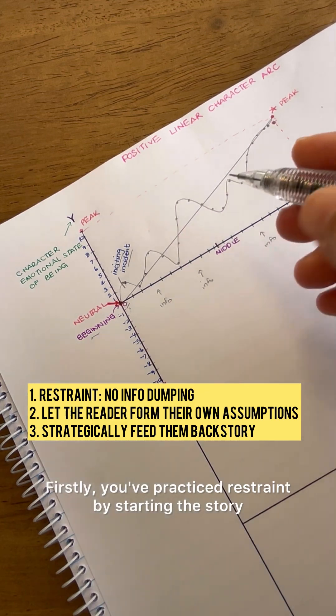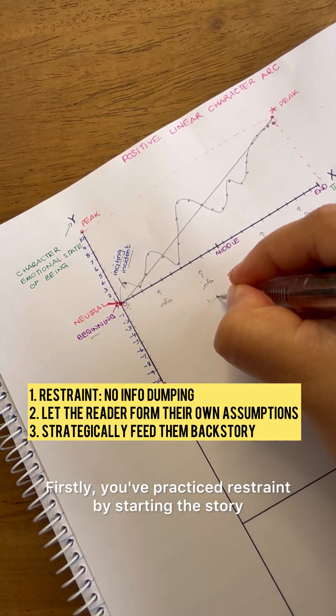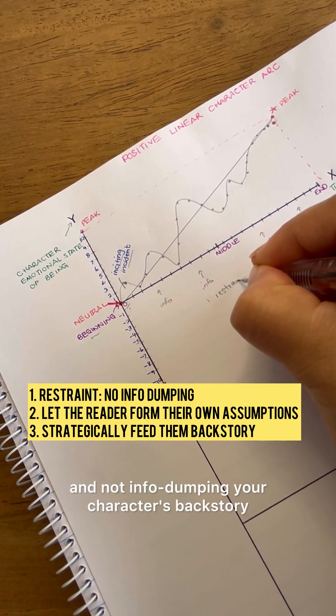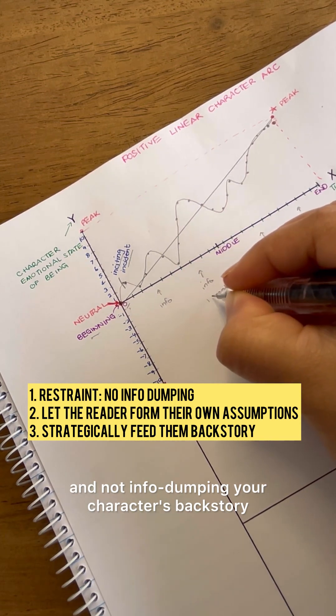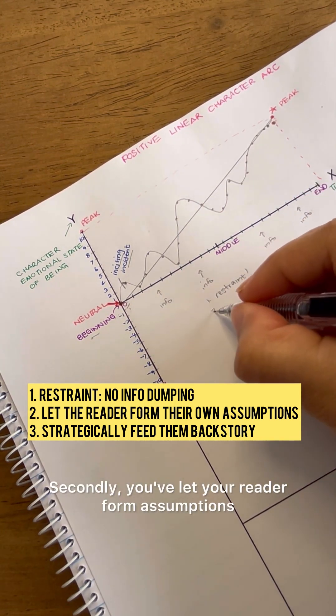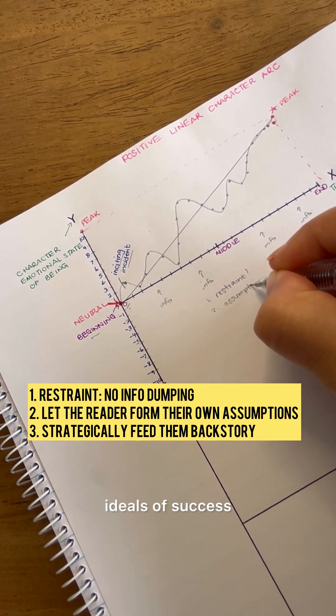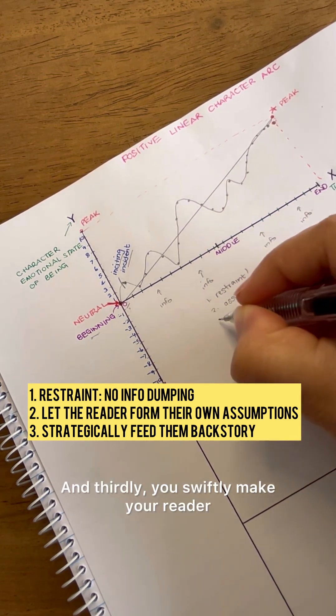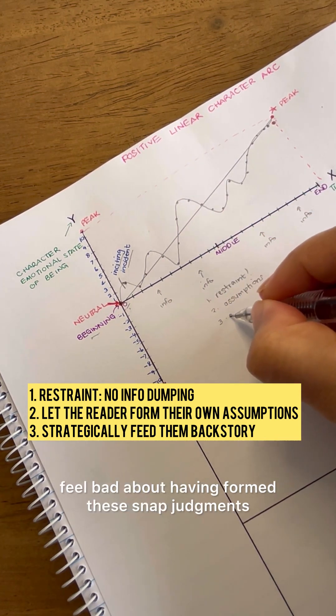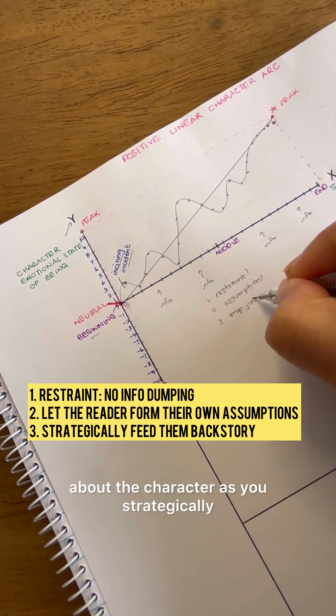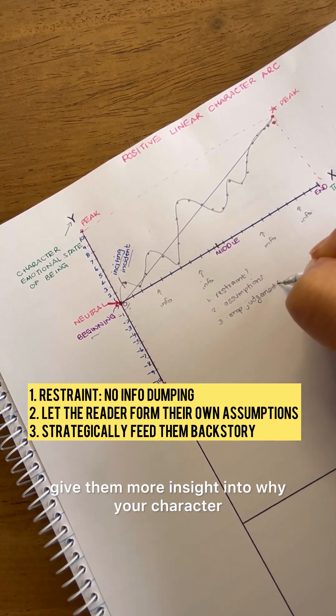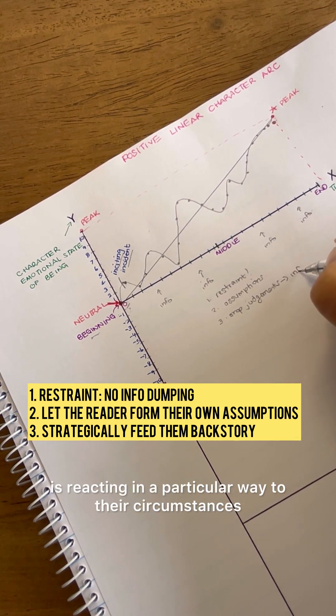Firstly, you've practiced restraint by starting the story where the action begins and not info dumping your character's backstory. Secondly, you've let your reader form assumptions about the main character based on society's ideals of success. And thirdly, you swiftly make your reader feel bad about having formed these snap judgments about the character as you strategically give them more insight into why your character is reacting in a particular way to their circumstances.